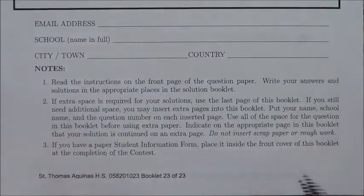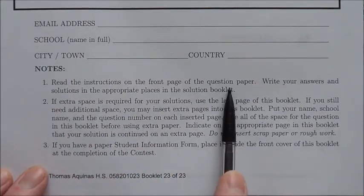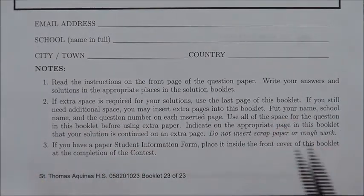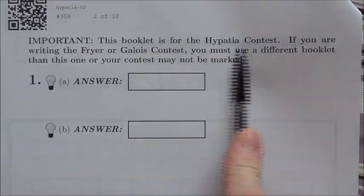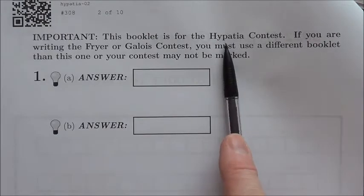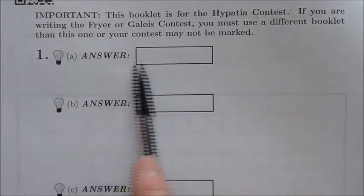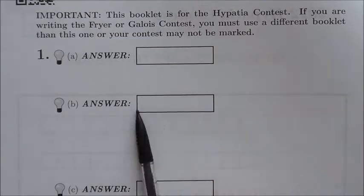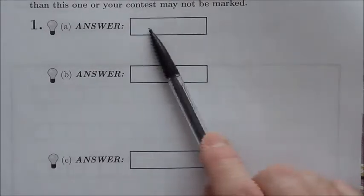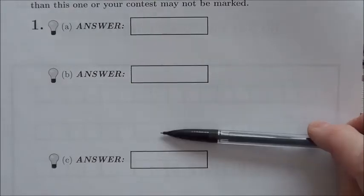You're going to get a contest booklet soon. Read the instructions on the front page of the question booklet, then answer questions in the solution booklet. When you open it up, there's a warning that this booklet is for the Hippatia contest, so if you're not in grade 11, you'll need one of the other two booklets. Your final answer goes in the box for each question, but there's space to do your pertinent work. If you don't have the correct answer, markers will look at your pertinent work to see if there are any part marks you could get.